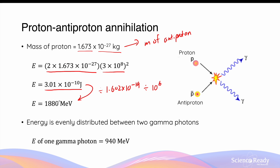This amount of energy, whether in joules or mega electron volts, is shared evenly between the two photons produced from this annihilation process. So the energy of a single gamma photon can be calculated by dividing the total energy of 1880 mega electron volts by 2, which gives 940 mega electron volts.